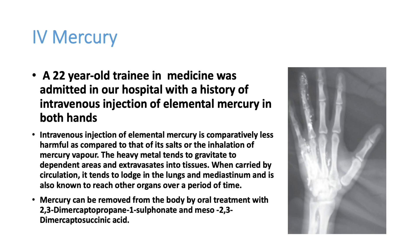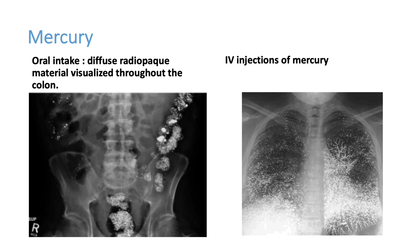Another case is a 22-year-old medicine trainee admitted with intravenous injection of elemental mercury. On X-ray of the hand, you can see bright spots where mercury has extravasated. When the patient injects IV mercury, it may reach the lungs — bright spots are seen throughout the lung fields on X-ray. On the opposite side, a patient who consumed mercury orally shows bright radiopaque material on abdominal X-ray, classical of mercury poisoning.